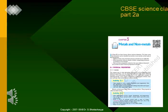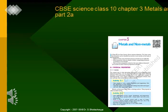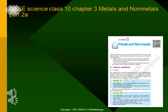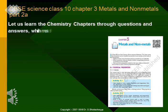CBSE Science Class 10, Chapter 3: Metals and Non-Metals, Part 2A. Let us learn the chemistry chapters through questions and answers, which most of the students prefer. Note that PG here is for page, PR for paragraph in your textbook, and questions are in yellow color while answers are in white color.